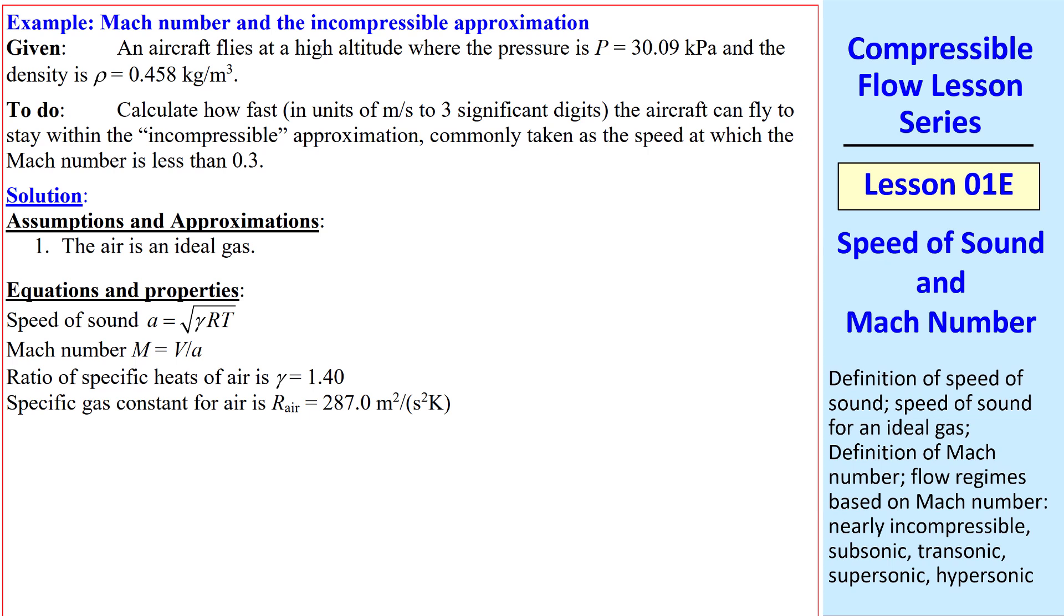Let's do an example problem. An aircraft flies at high altitude, where the pressure is only about 30 kPa. And the density of the air is less than half of normal, about .458 kg per meter cubed. Let's calculate how fast, in meters per second, that the aircraft can fly to stay within the incompressible approximation, namely Mach number less than .3. We'll assume that the air is an ideal gas.